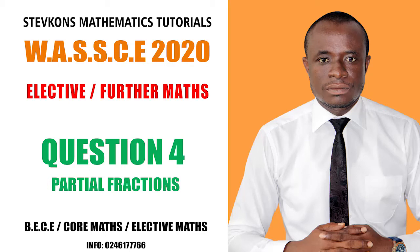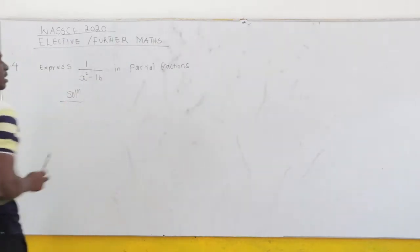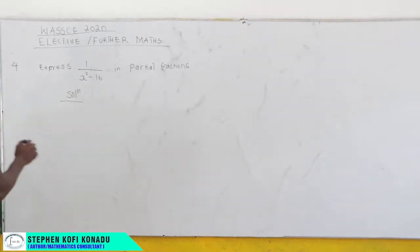WASSCE 2020, question number 4, elective math. Now we are being told to express 1 over x square minus 16 in partial fraction.